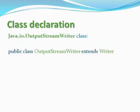Class declaration: java.io.OutputStreamWriter class. Public class OutputStreamWriter extends Writer.